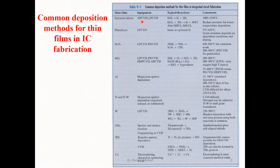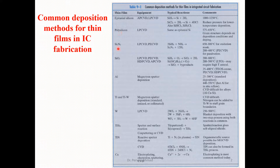The table shows the kind of thin films, the equipment that can be utilized for their deposition, the typical chemical reactions, and comments on each technique. On the leftmost column we have thin film types: epitaxial silicon, polysilicon, silicon nitride, silicon dioxide, aluminum, titanium, titanium tungsten, tungsten, titanium silicide, titanium nitride, and copper.